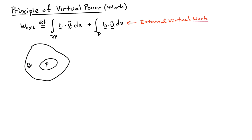To talk about the principle, we need a few definitions first. Let me define external virtual power, or external virtual work. We consider a body B and a subset P of that body. The external virtual power is defined to be the integral of the surface forces — the tractions — times a virtual velocity U tilde, plus the body forces dotted with those same virtual velocities integrated over the body.